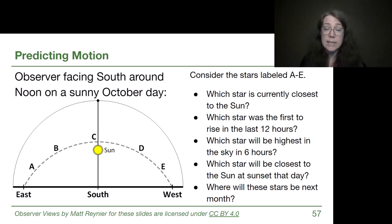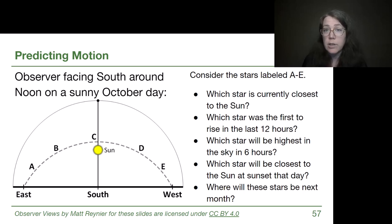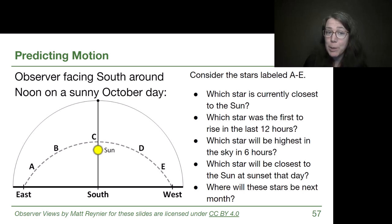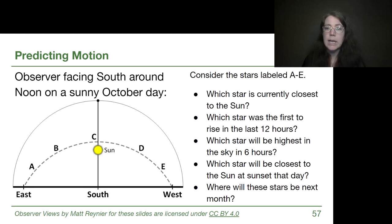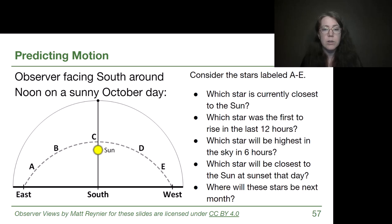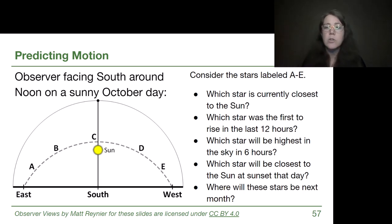Now let's face south and think about stars labeled A through E, all roughly along the dashed line representing the celestial equator. Star C is currently closest to the sun — it's noon — so we can't see it but it's in the direction of the sun. When asking which star was first to rise in the last 12 hours, we rewind about half a circle: star E is closest to setting, meaning it appeared first — E rose, then D, then C. So E was the first to rise.